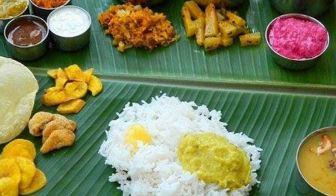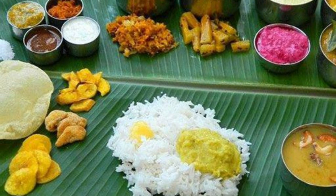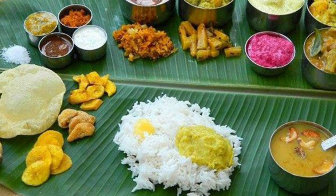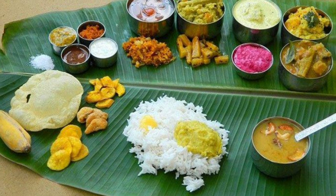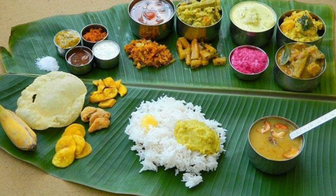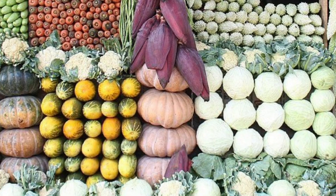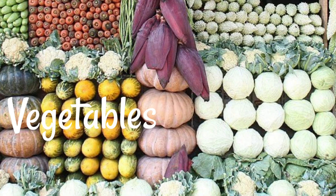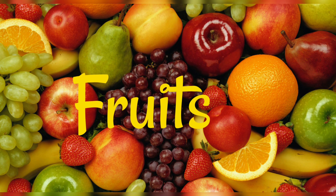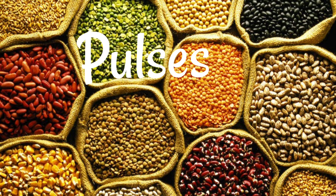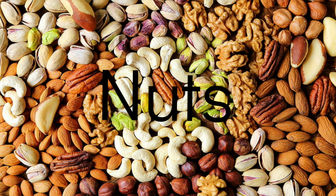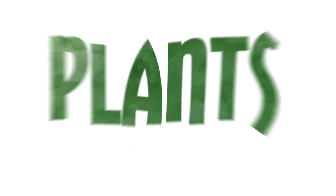All of us know that food is essential for our life. We always love to eat varieties of food. To get all the required nutrients to our body, we eat vegetables, fruits, grains, pulses and nuts. Where do these foods come from? Yes, it's from plants.